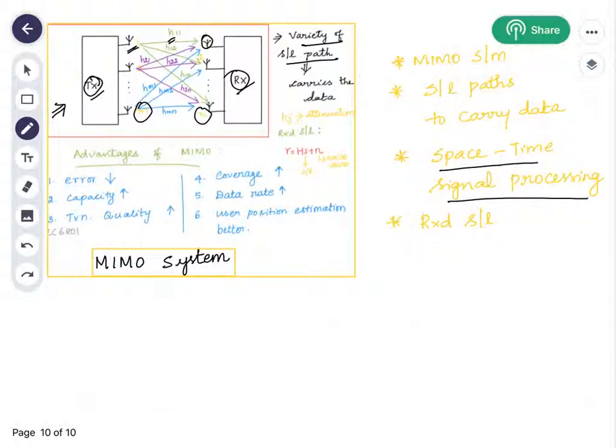Let us see how to write the equation for the received signal in a MIMO system. The received signal can be denoted by the letter R. The received signal is equal to the attenuation coefficient H into the intended signal S plus the noise factor N. This is the equation for the received signal in a MIMO system.